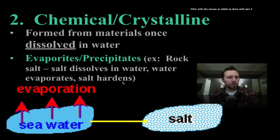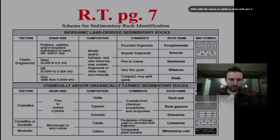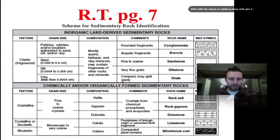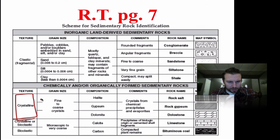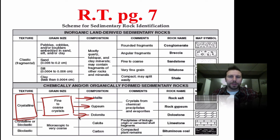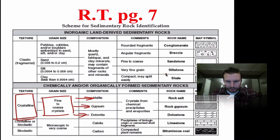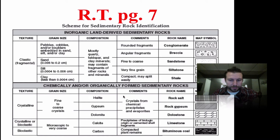On page seven of the reference table, we can look at crystalline sedimentary rocks. It tells us the crystal size and three common crystalline sedimentary rocks we may come across. The comments section notes that these form from chemical precipitates or evaporites.